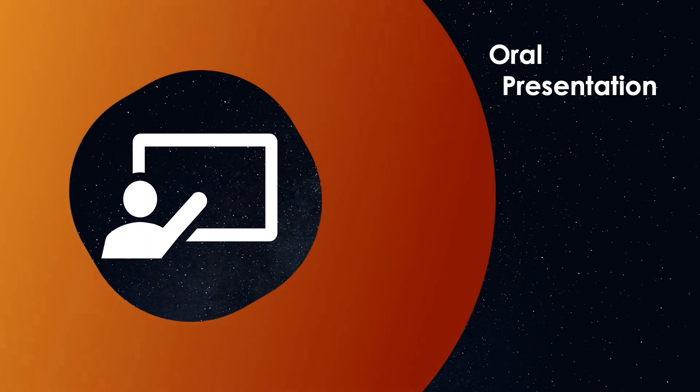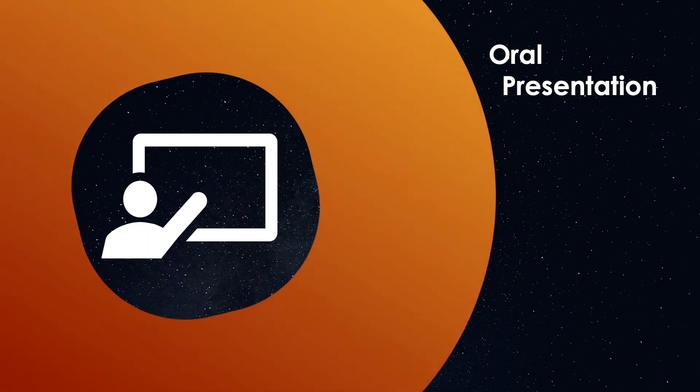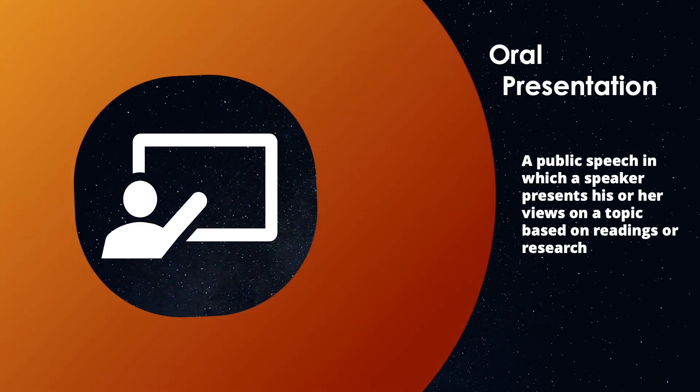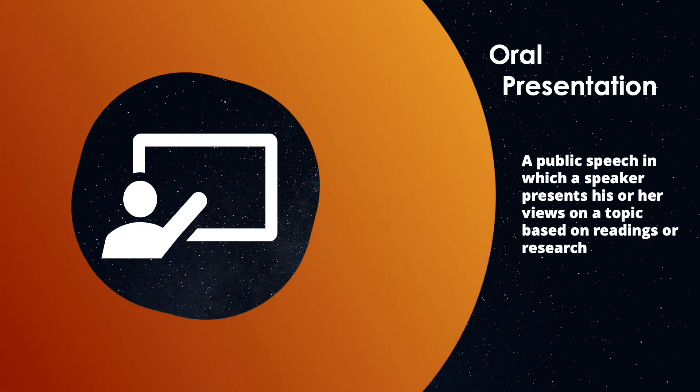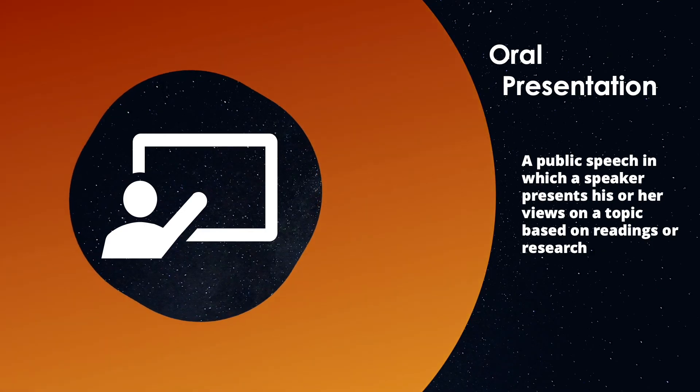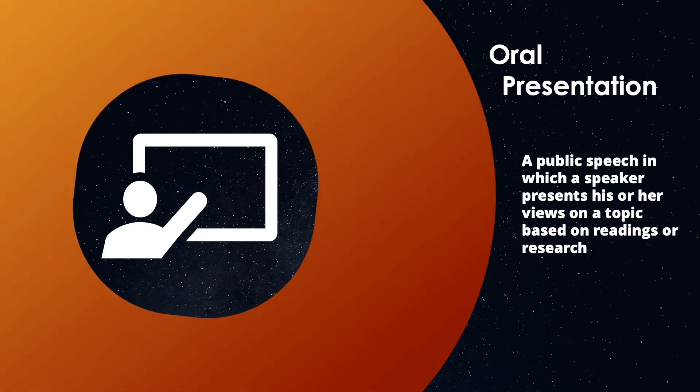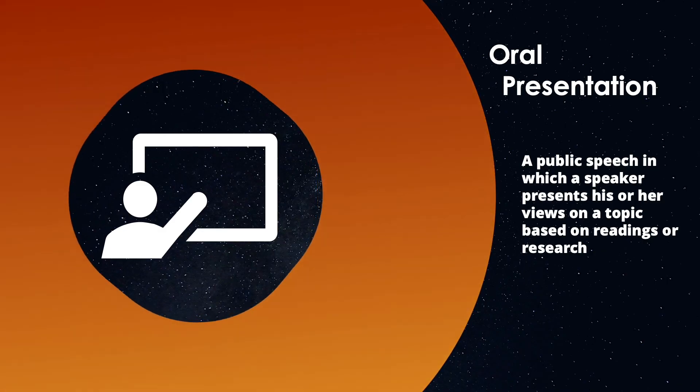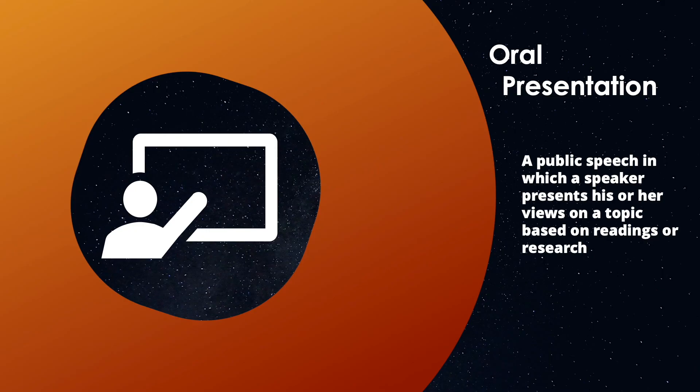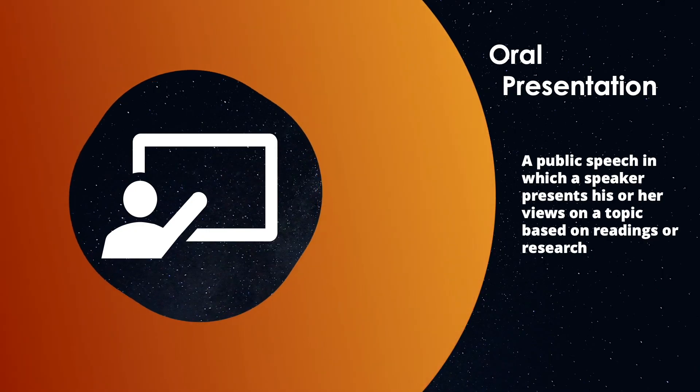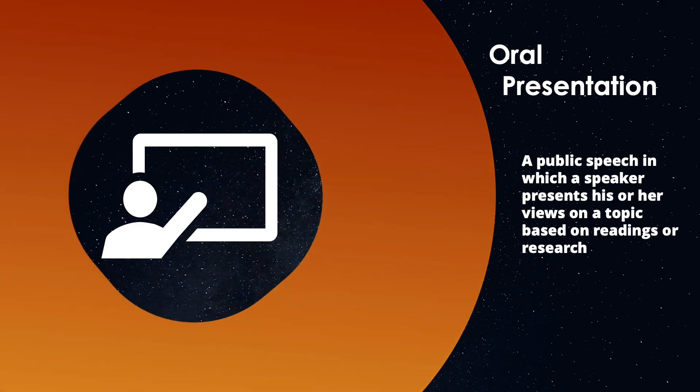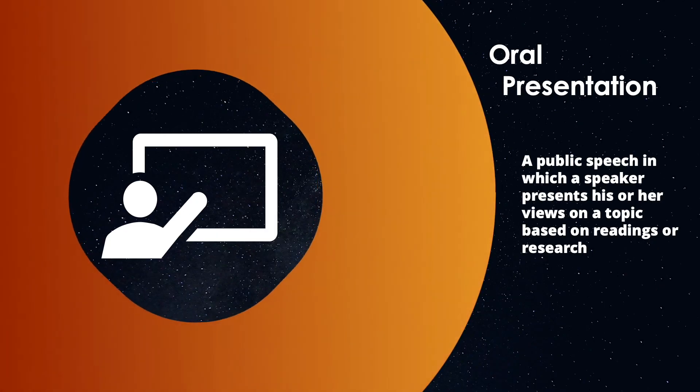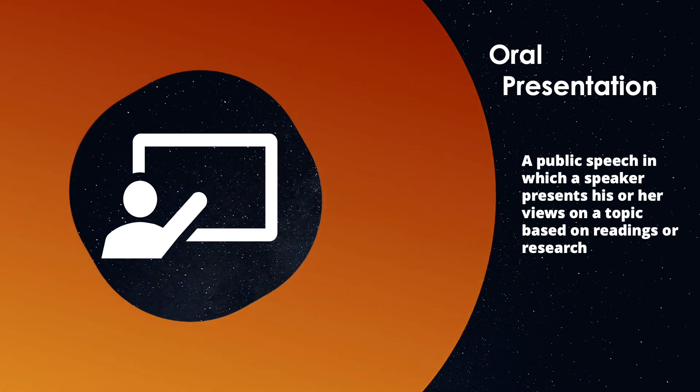The next type of scientific writing is oral presentations. An oral presentation is a public speech in which a speaker presents his or her views on a topic based on readings or research. It may seem a bit counterintuitive to classify this as scientific writing, but successful public speaking requires careful planning, organization, and many times writing out your main talking points. Examples of oral presentations include thesis and proposal defenses, presenting at a conference, or to the general public.